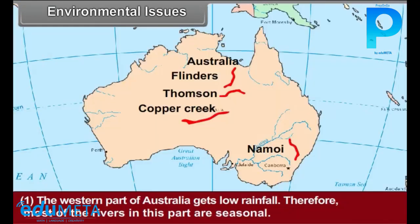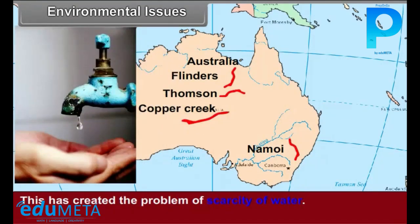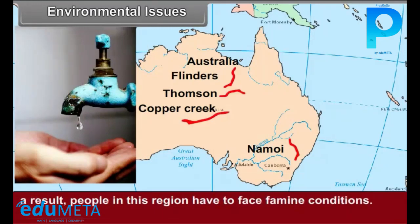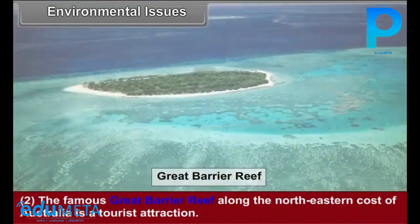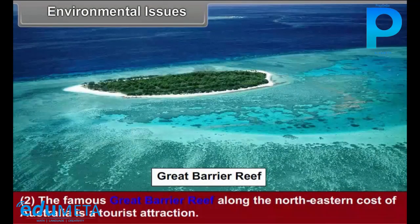Environmental Issues: The western part of Australia gets low rainfall; therefore, most of the rivers in this part are seasonal. This has created the problem of scarcity of water, and as a result people in this region have to face famine conditions. The famous Great Barrier Reef along the north-eastern coast of Australia is a tourist attraction.